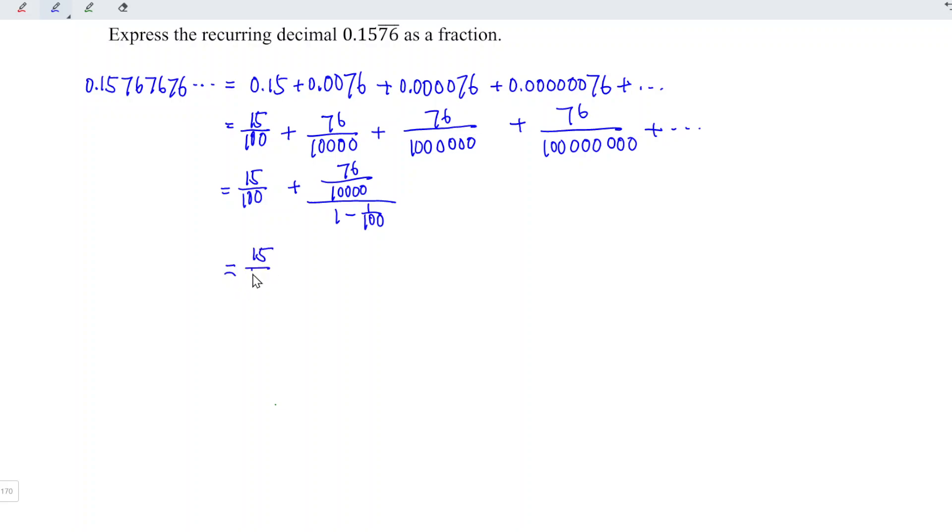This equals 15 over 100 plus 76 over 10,000. For the denominator part, we have 1 minus 1 over 100. We know that 1 can be written as 100 over 100.